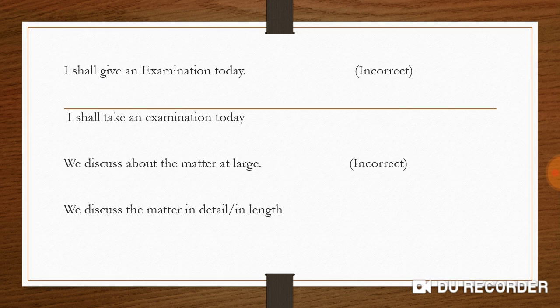Second sentence: 'I shall give an examination today.' This is inversely used. In Sindhi and Urdu we say 'exam دینا,' but in English, the student takes an exam — the teacher or invigilator gives it. So 'give an exam' is wrong. The correct sentence is: 'I shall take an examination today.'